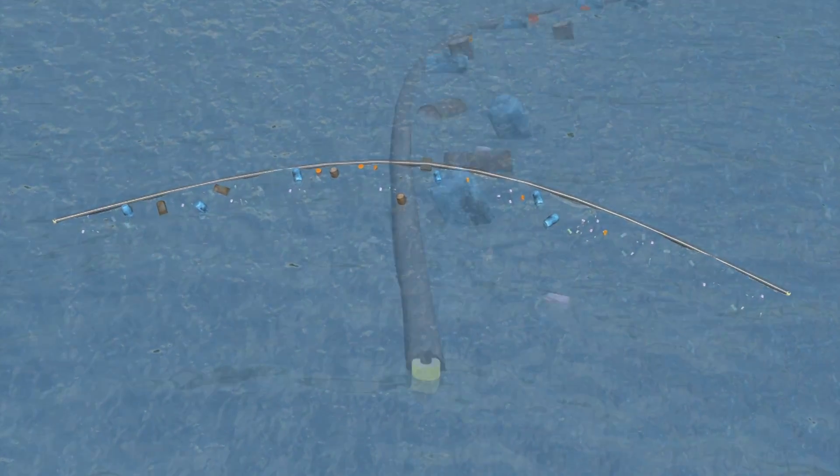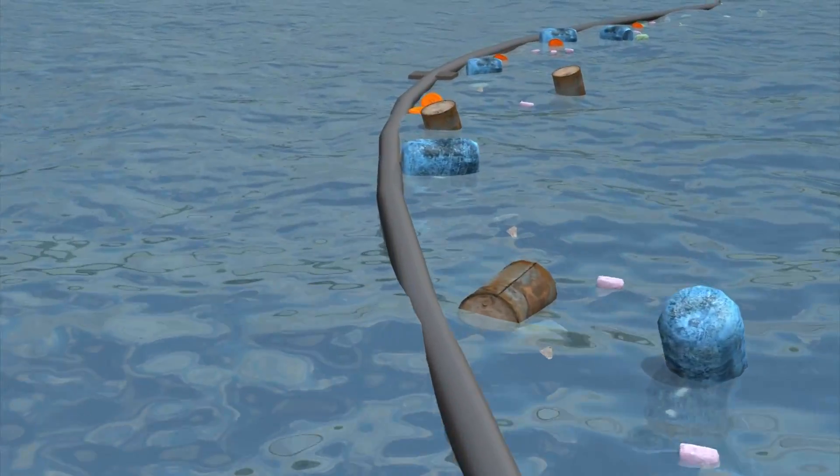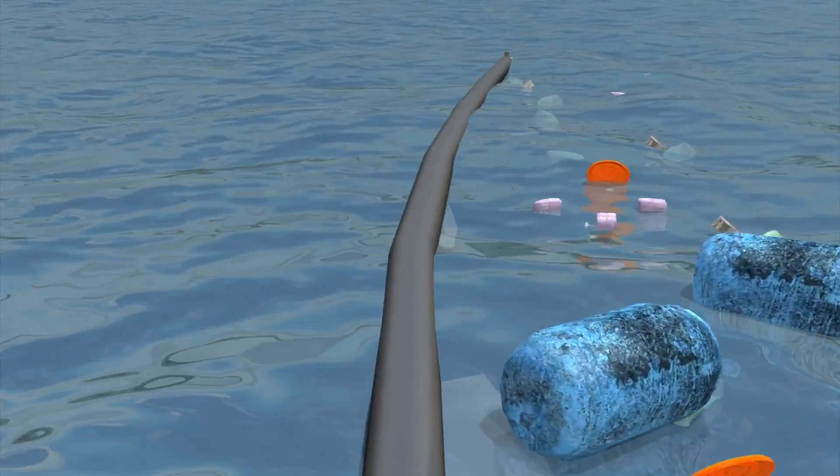System 001 is a 2,000 feet long floater with a 10-foot deep skirt connected below. The floater is designed to stop plastics from flowing over the system, while the skirt traps particles from escaping underneath.